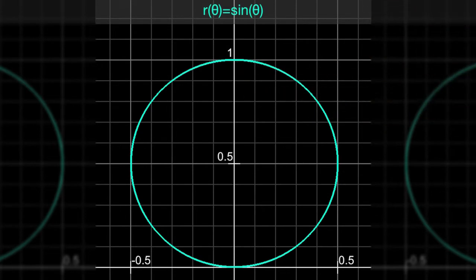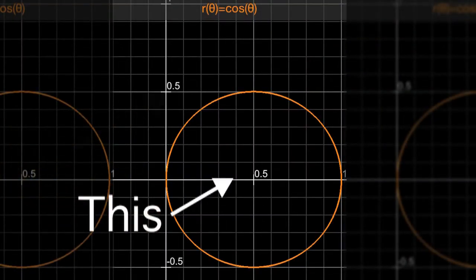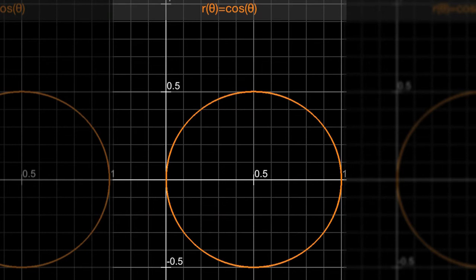r equals cosine theta - that's also a circle, but it's a circle on the x-axis because cosine represents x. So when cosine is zero, that's one, and that's why it's there, and it goes around twice.